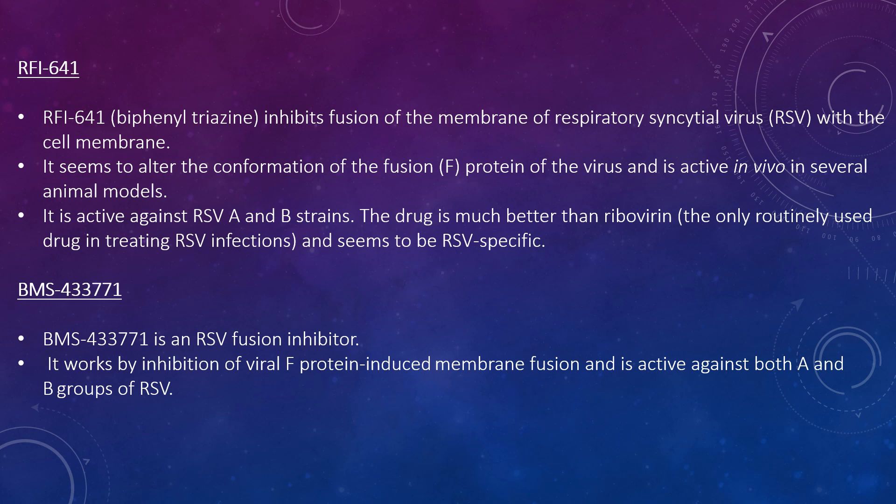RFI-641 cannot be taken orally and is delivered as an aerosol, which patients will likely find a problematic mode of delivery. It can be used with infants and derivatives are less toxic. Looking at BMS-433771, it is also an RSV fusion inhibitor — an inhibitor of viral protein-induced membrane fusion. It is active against both A and B groups of RSV and has a good effect against RSV infection in two rodent models when dosed orally prior to infection, and may be of clinical use.